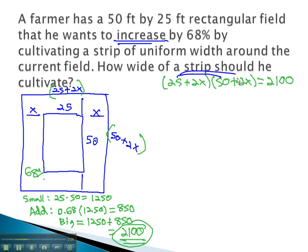We can start solving using FOIL to get 1,250, plus 50x, plus 100x, plus 4x squared, equals 2,100.